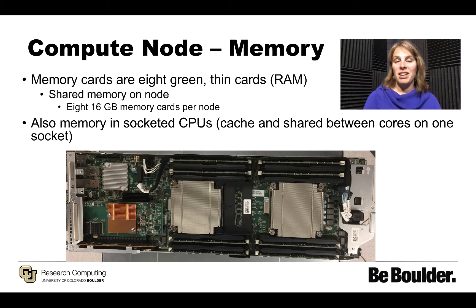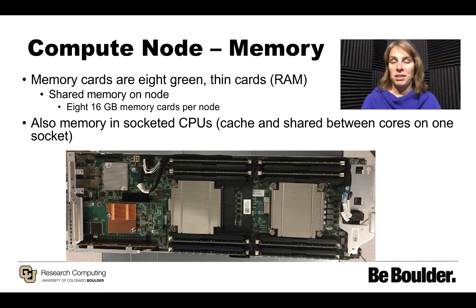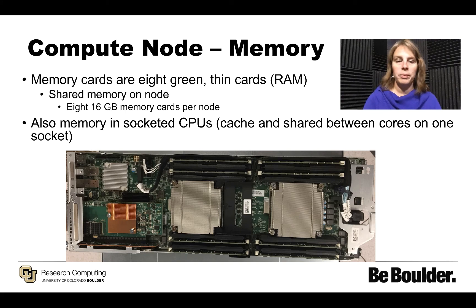There's also memory within the socketed CPUs, as mentioned earlier. That memory is underneath the heat sinks, so we can't see it. The memory there is cache, and it is shared between the cores on one socket, meaning it's shared within 12 cores.